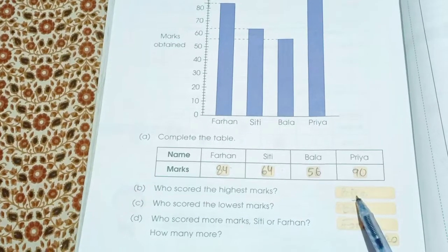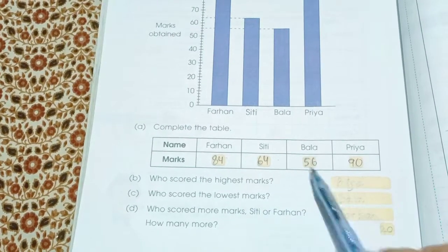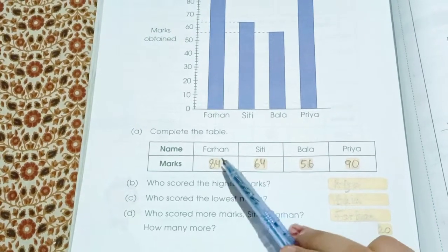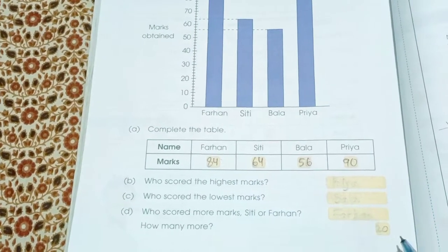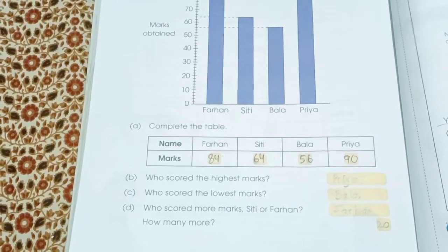Now, who scored the highest marks? Priya scored the highest marks. Who scored the lowest marks? Bala. Who scored more marks, Siti or Farhan? Farhan scored the more marks. How many more? 84 and 64 minus 20 more.